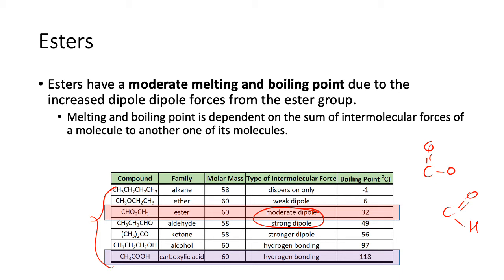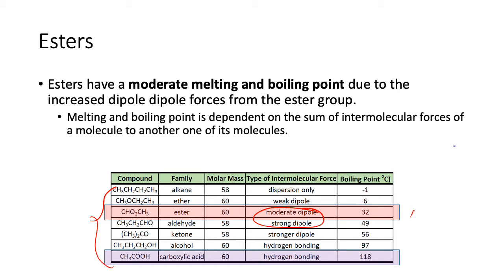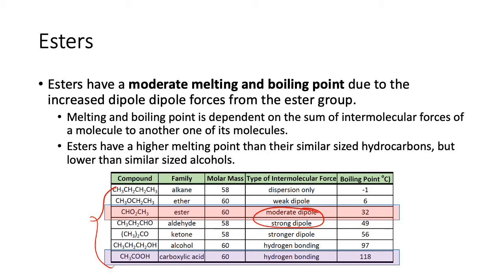Ketones apparently have a greater dipole than aldehydes. The ketone creates a trigonal planar shape around the central carbon — the very negative part on one side and the very positive part on the other — making it a stronger dipole than an aldehyde group regardless of chain length. Since none of these have hydrogen bonding, the ranking depends on dipole-dipole strength. Alcohols and carboxylic acids have high melting and boiling points, higher than similar-sized hydrocarbons but lower than similar-sized alcohols.